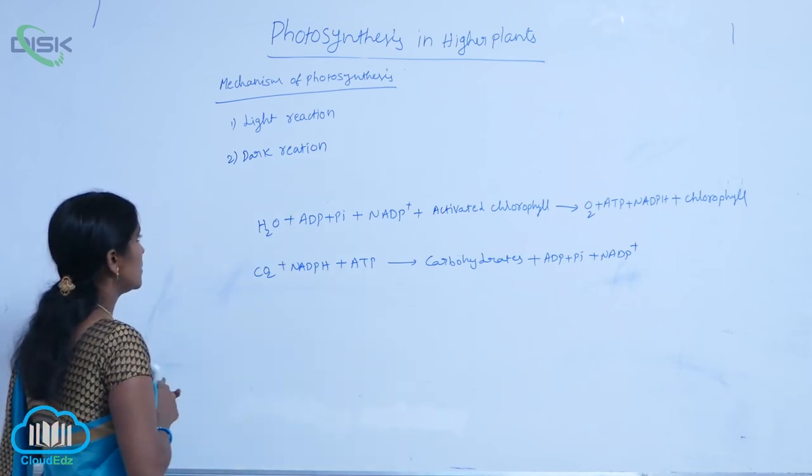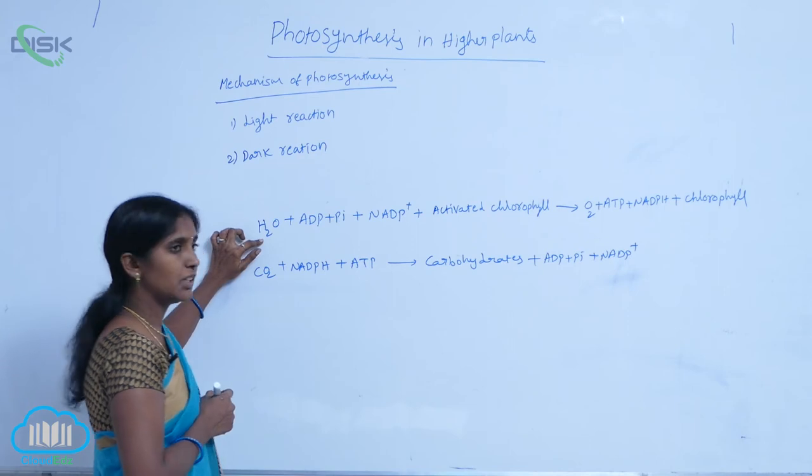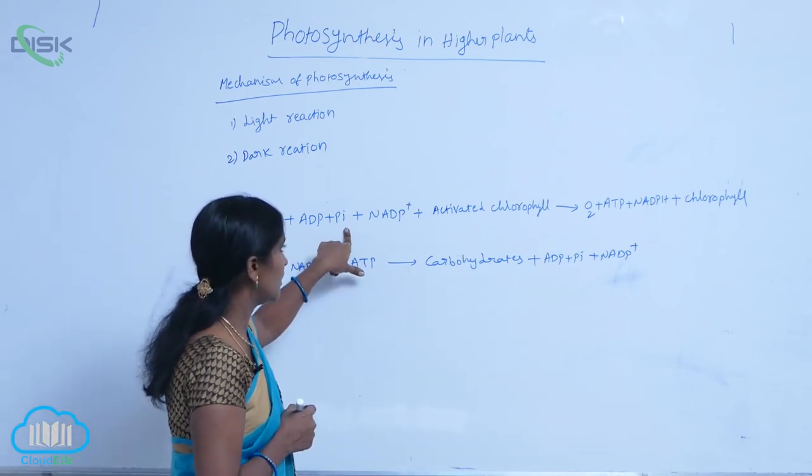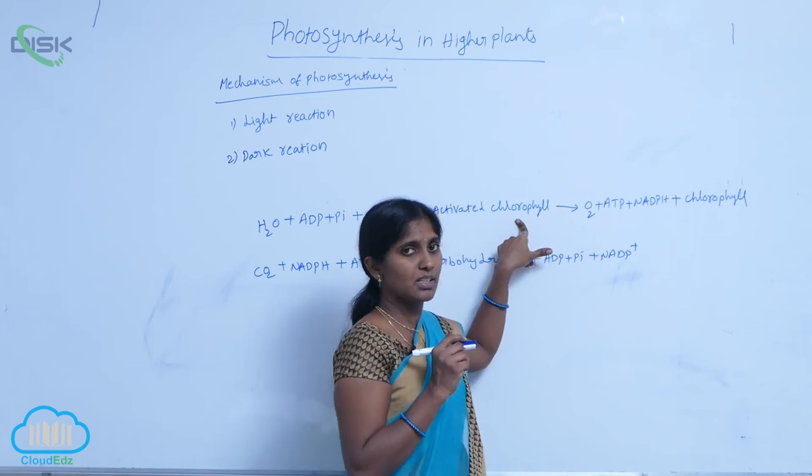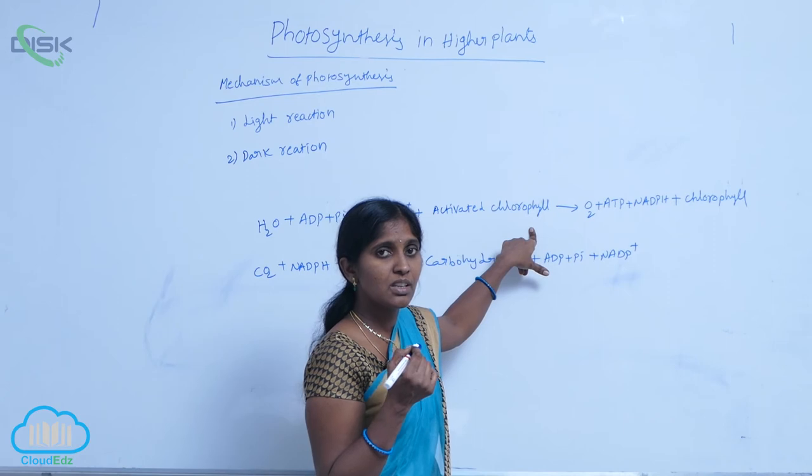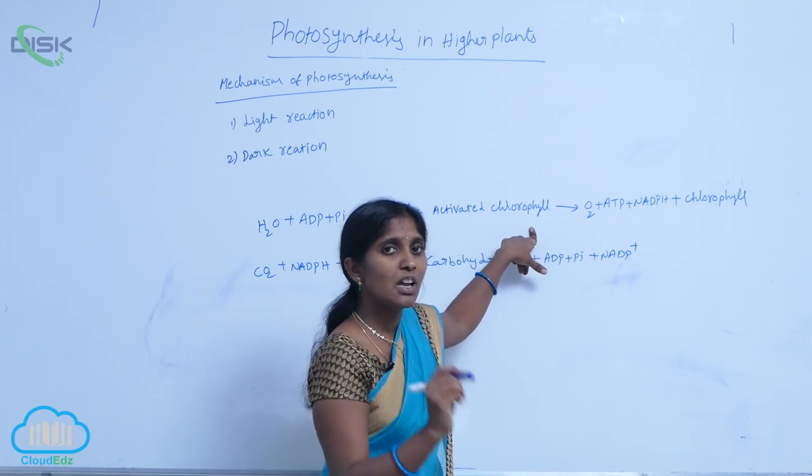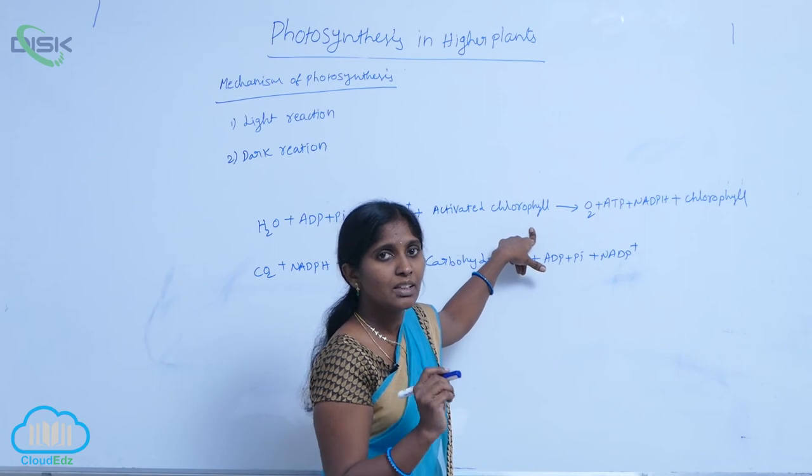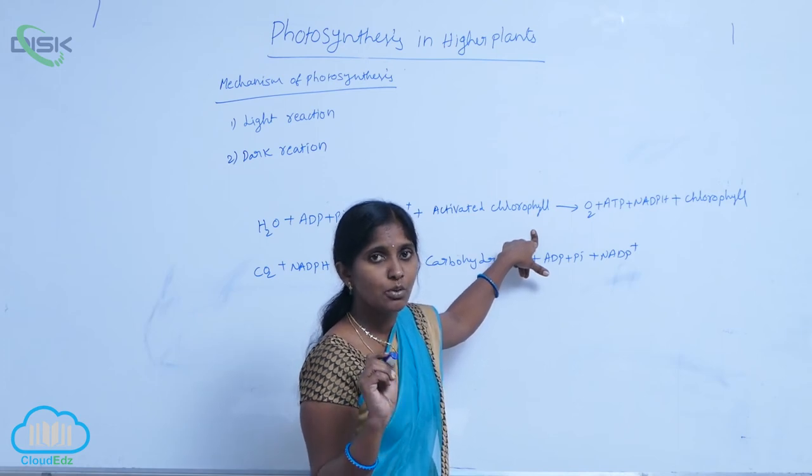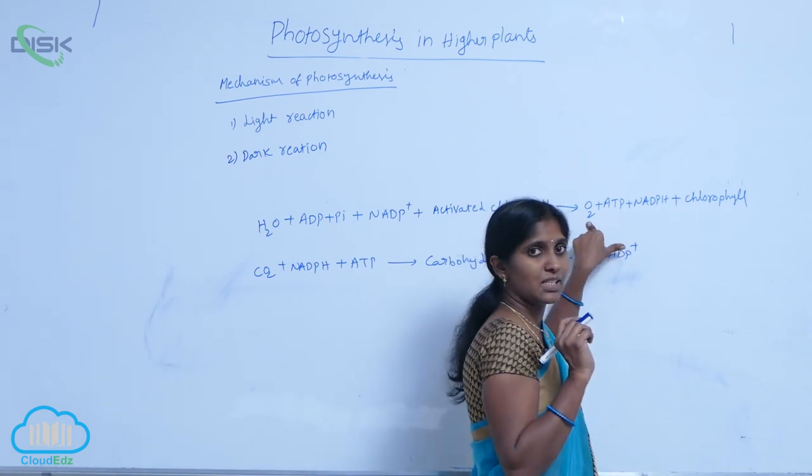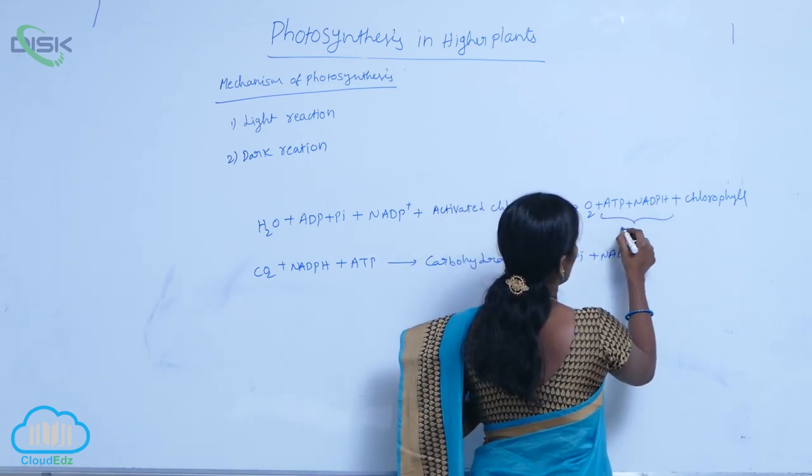This is the summary of light reaction. Water molecule is split. Adenosine diphosphate with inorganic phosphate, NADP+ and activated chlorophyll react. The light harvesting complexes harvest the light and activate chlorophyll A. Electron transport and proton transport result in production of ATP as well as NADPH2 in photosystem 1 and photosystem 2. Oxygen is released. ATP and NADPH2 are produced - these two are called assimilation energy.